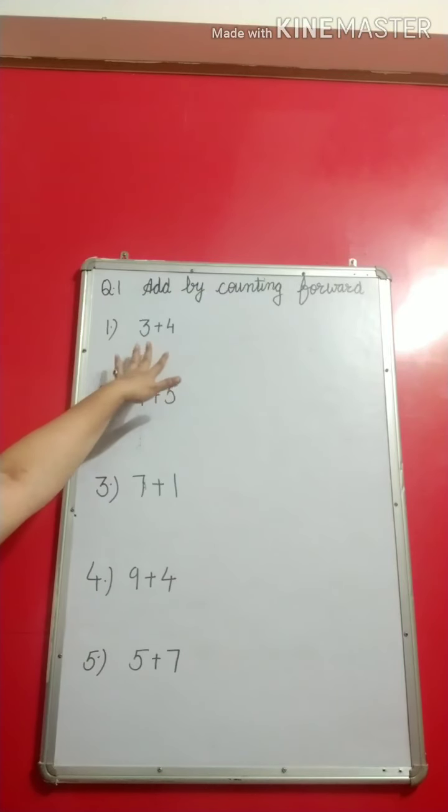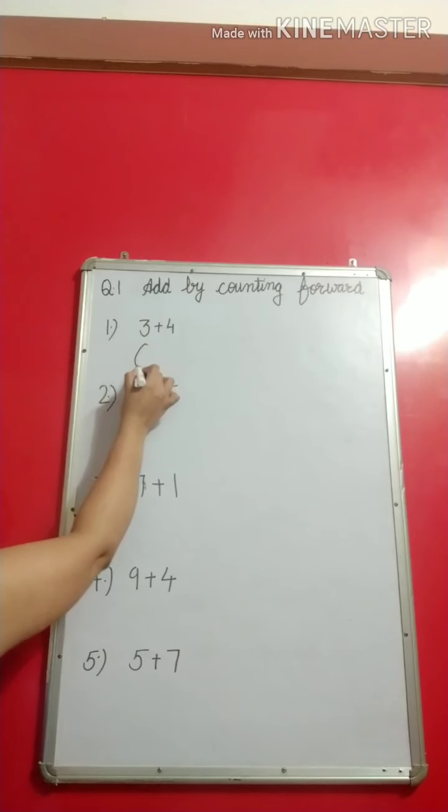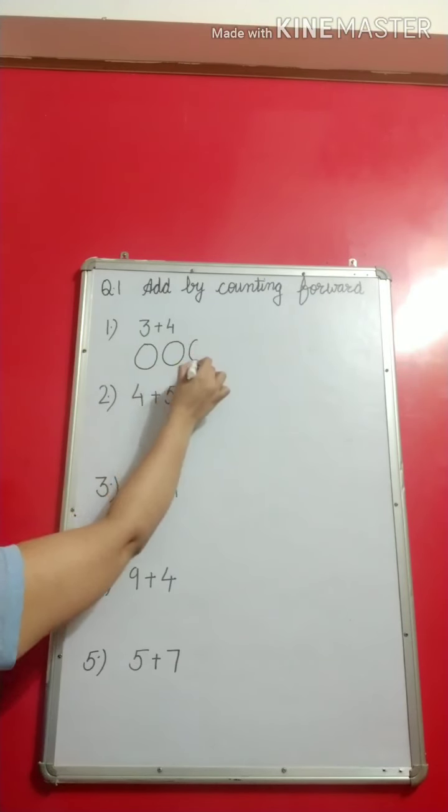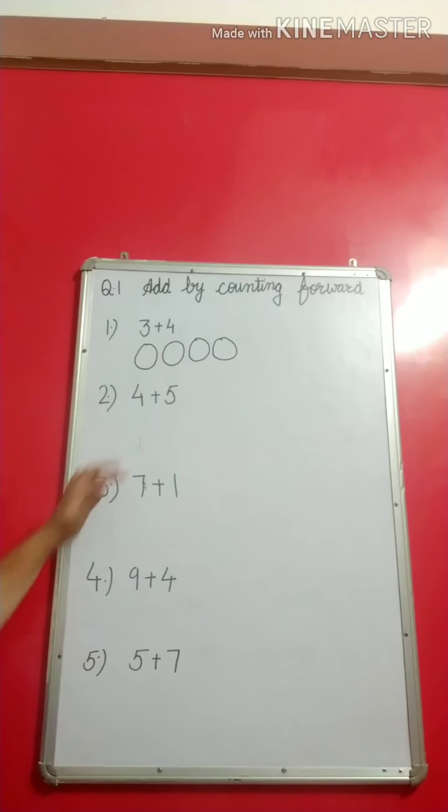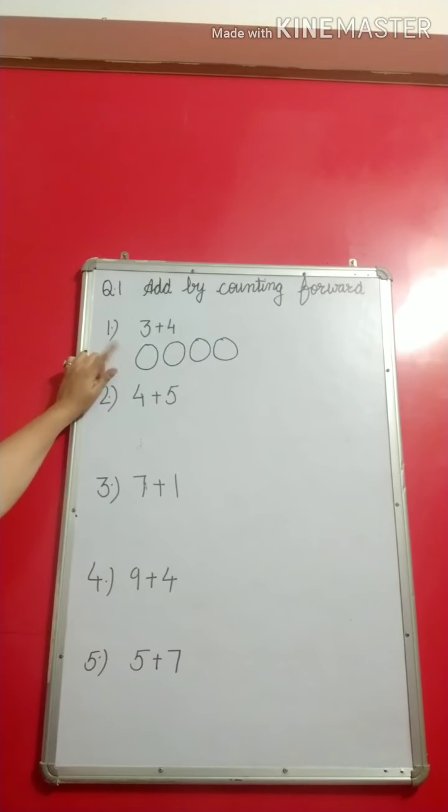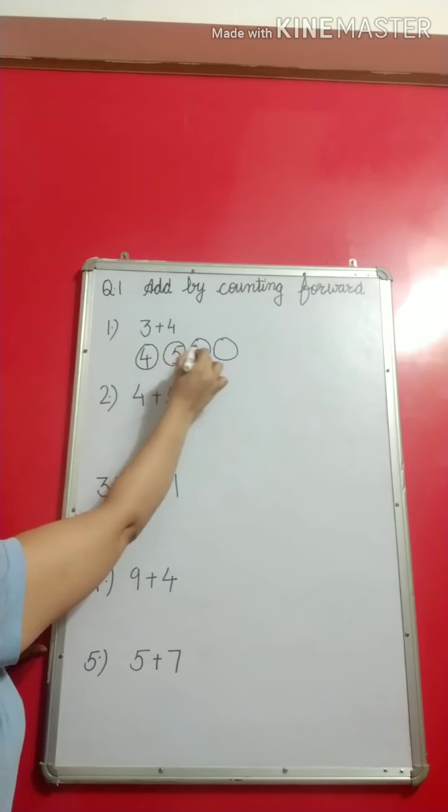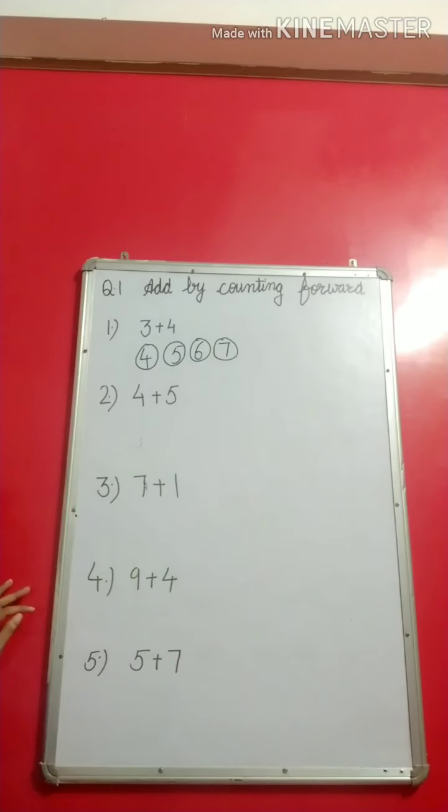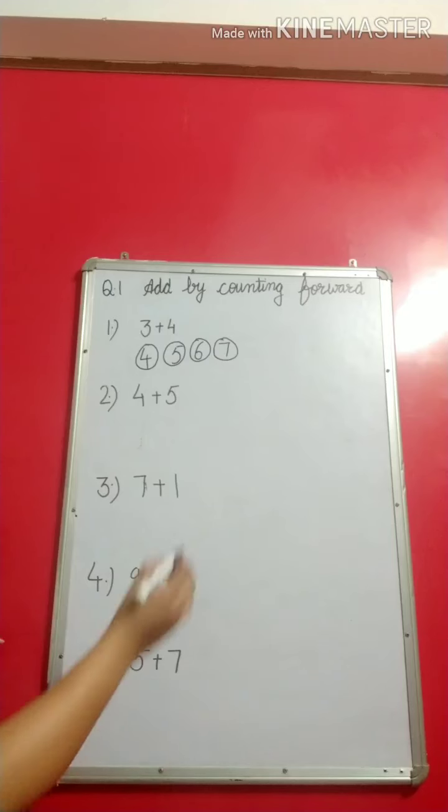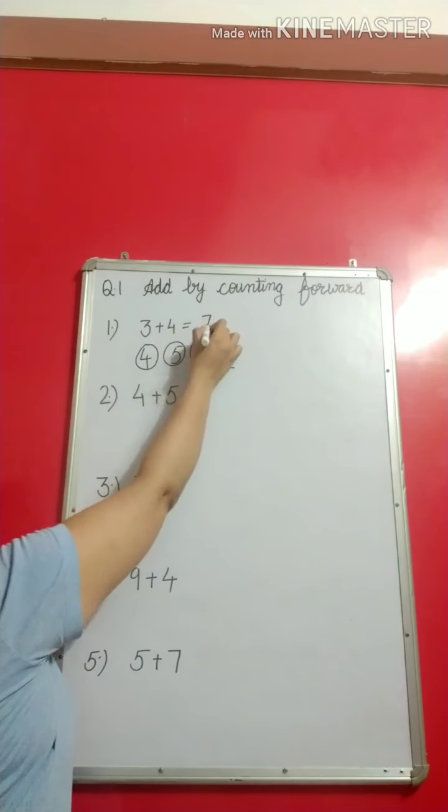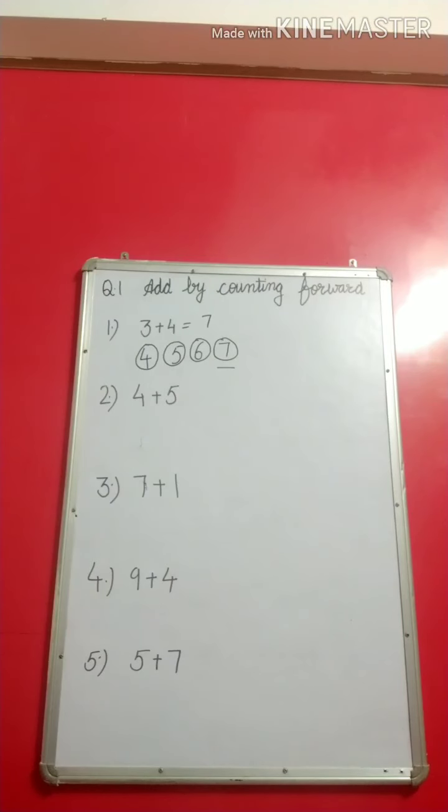But if I am asked to do this on paper, then how will I be doing it? What I need to do is draw 4 circles here, because the second number is 4. After 3, I will write the next numbers: 4, then 5, then 6, then 7. So which number have I reached this way? That is 7. So my answer is 7. This is the way we add numbers by counting forward, and we will write this way on our paper or in our notebook.